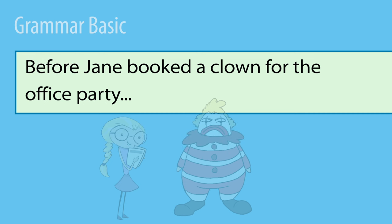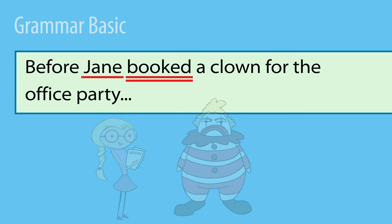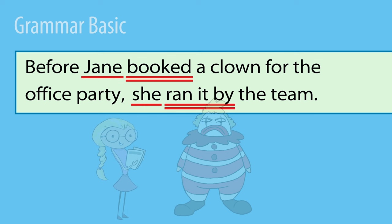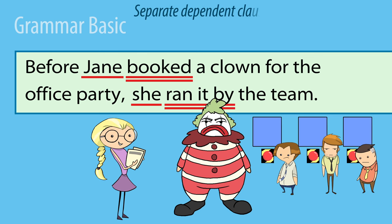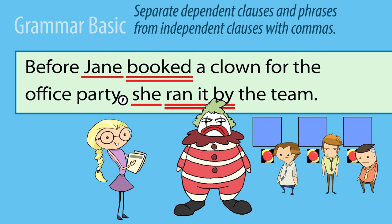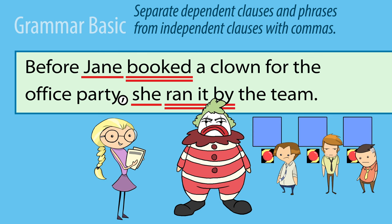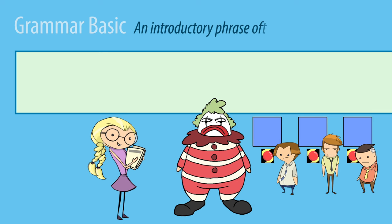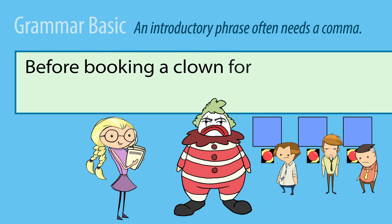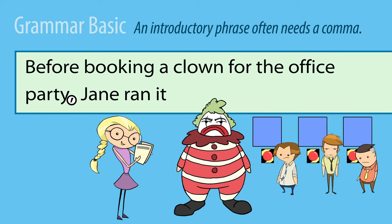Here's a sentence that has both a dependent clause and an independent clause: before Jane booked a clown for the office party, she ran it by the team. We need to know all this because we separate dependent clauses and phrases from independent clauses with commas. Without a comma, this sentence would be punctuated incorrectly. Remember to use commas to separate dependent clauses and phrases from independent clauses. An introductory phrase also often needs a comma: before booking a clown for the office party, Jane ran it by the team.